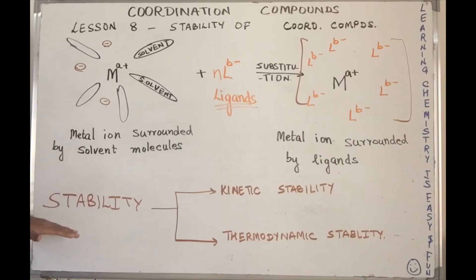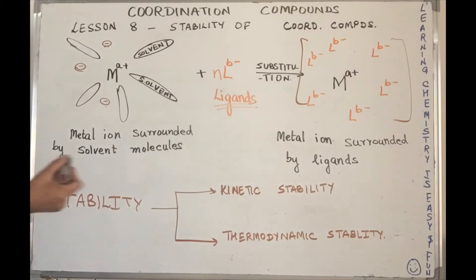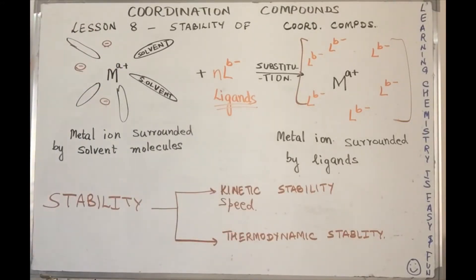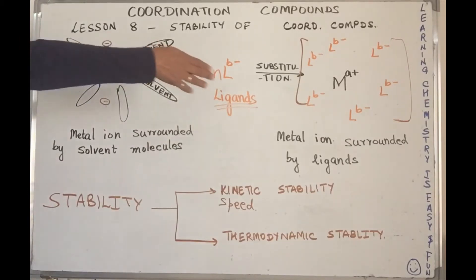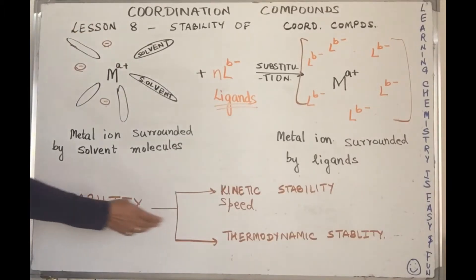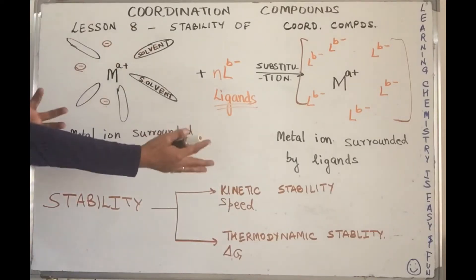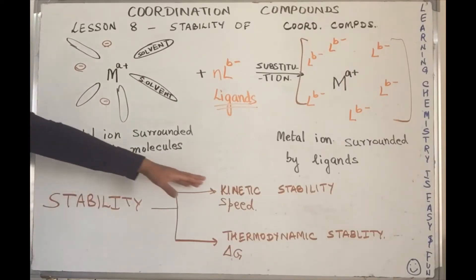When we talk about the stability of a coordination compound, we talk about two types of stability. The first is kinetic stability — 'kinetic' being a term related to speed, as used in physics. Kinetic stability talks about the rate at which the ligand complex is formed, or the rate at which the ligand displaces the solvent molecules to form the complex ion. The second type is thermodynamic stability.